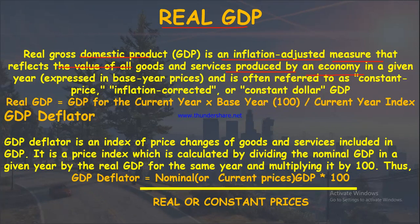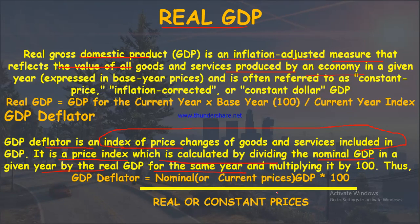GDP deflator is an index of price changes of goods and services included in GDP. It is calculated by dividing nominal GDP in a given year by real GDP for the same year and multiplying by 100. Formula: GDP deflator = (Nominal GDP / Real GDP) × 100. All formulas in this chapter are very important.